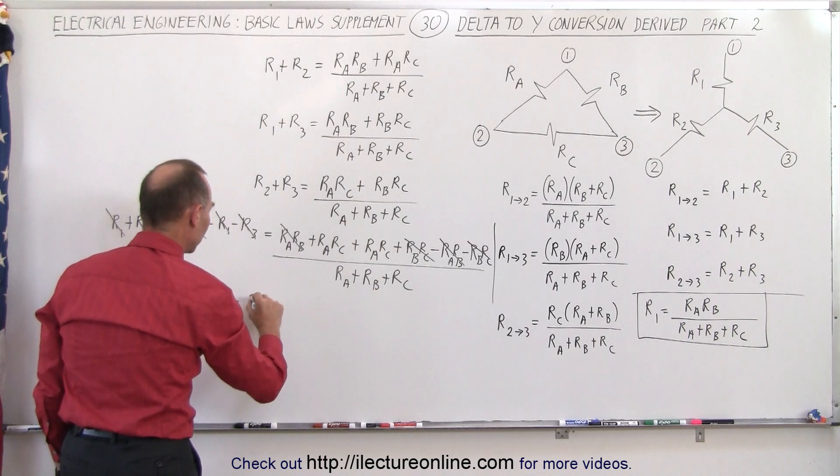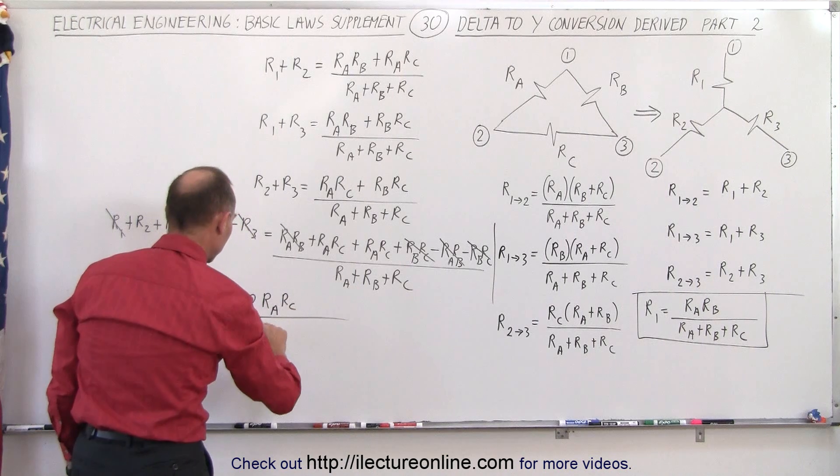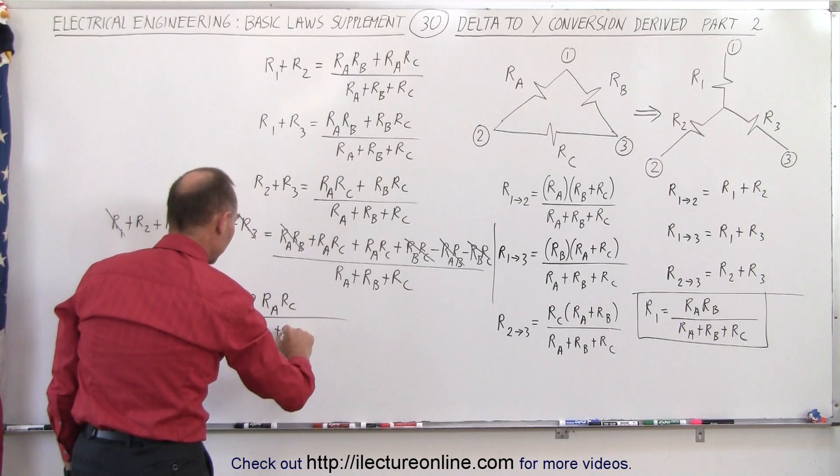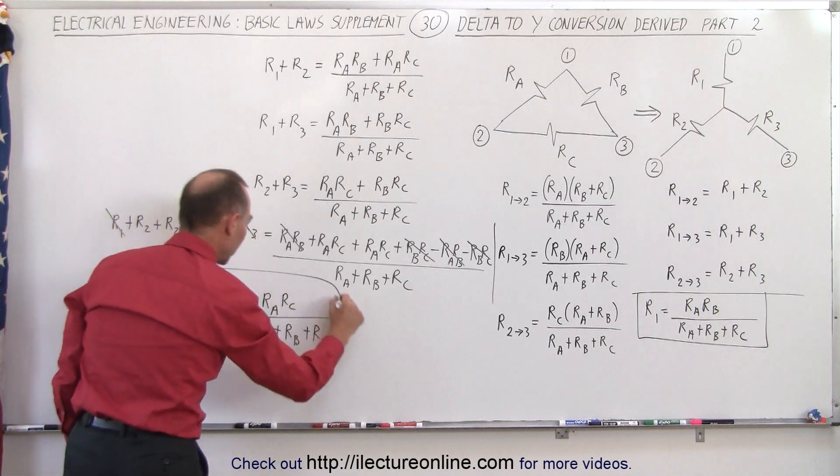So that means on the right side, we end up with two of these, which is 2 times Ra times Rc, divided by the common denominator of Ra plus Rb plus Rc. And here is our second equation.